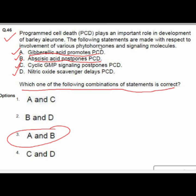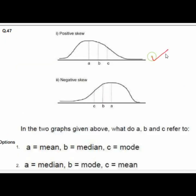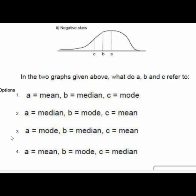Question 47 shows two graphs with positive skew. Option 3 is the correct answer: A is mode, B is median, and C is mean.